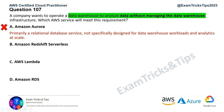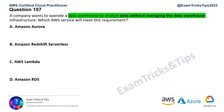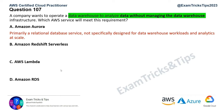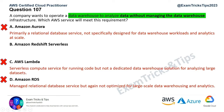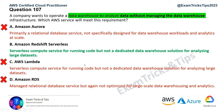AWS Lambda is a compute service — it has nothing to do with a data warehouse. RDS is a relational database service, not optimized for large-scale data warehousing and analytics. That leaves us with option B, Amazon Redshift Serverless. Amazon Redshift is a data warehouse service, and the serverless version is a managed service. So the answer to this question is option B.